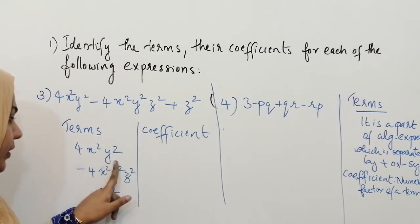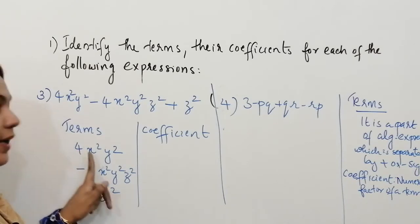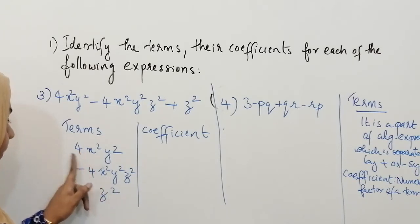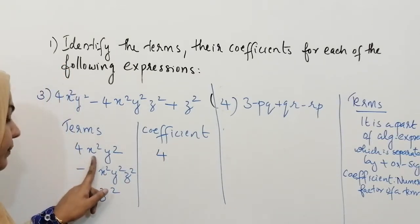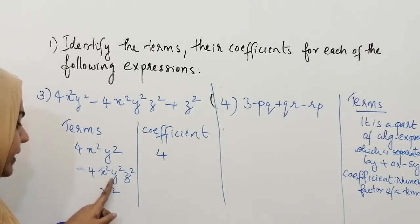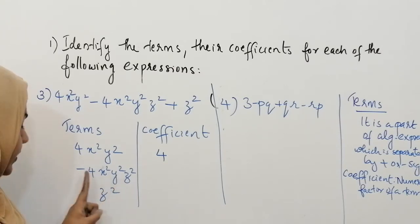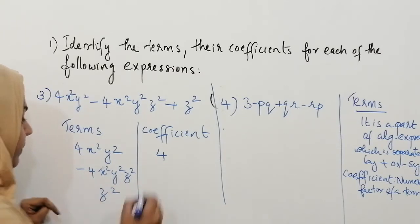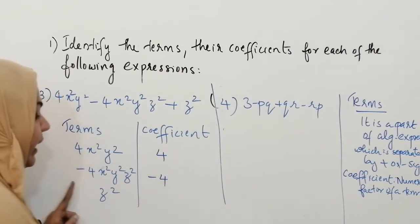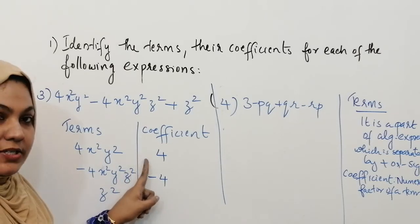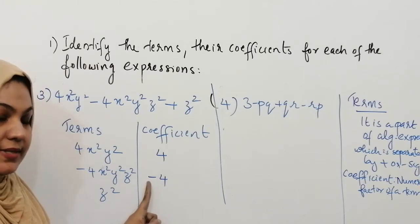What is the coefficient of 4x²y²? The number multiplied with the variable is called coefficient. Here the numerical factor is 4, so 4 is the coefficient of this term. The next term is minus 4x²y²z², and the number multiplied with the variable is 4 but the sign is minus, so the coefficient is minus 4. You have to mention the negative sign; no need to mention the positive sign because 4 already means plus 4, but you must mention the negative sign.